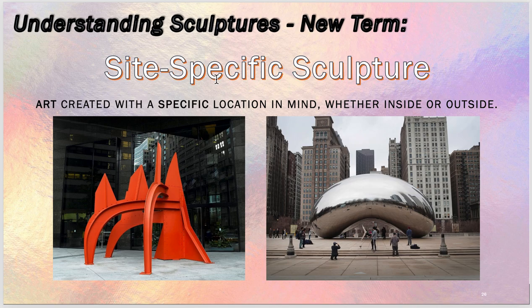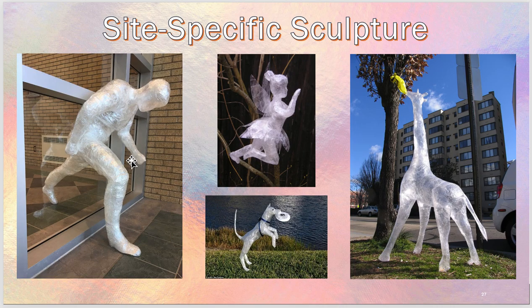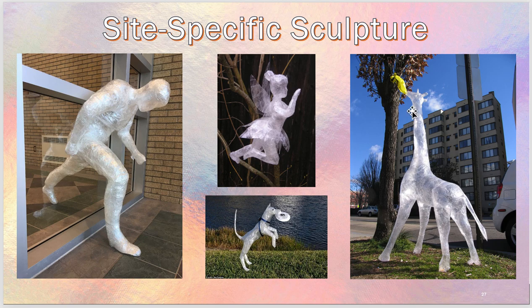Now we get to the new term: site-specific sculptures — art created with a specific location in mind, whether inside or outside. It's designed for a place, like the city paid for this sculpture to be located here, or people who own this building paid for this Alexander Calder piece. This site-specific piece would not work unless it was at a window, so it looks like he's half in and half out. The little fairy in the tree branches, the dog playing frisbee — obviously you'd want it outside — and the giraffe with the tree only works if it's outside with a tree.